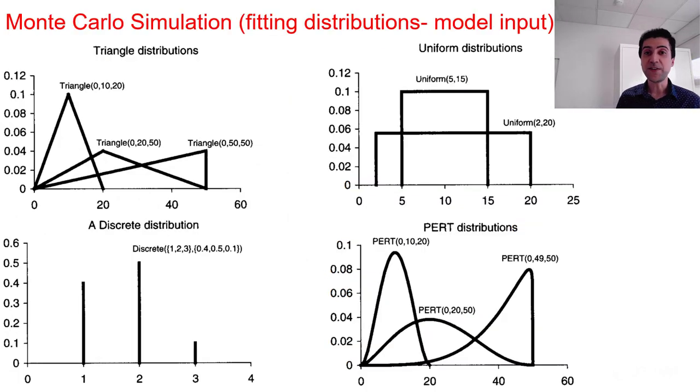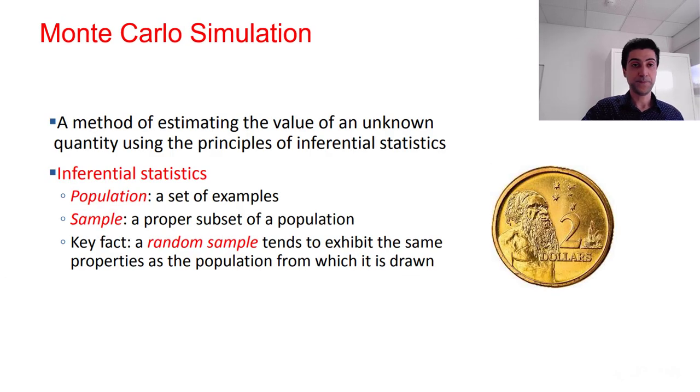In Monte Carlo simulation, we have more liberty to use other distributions than beta distribution. It is possible to use a range of continuous distributions including triangle, uniform, or PERT log normal distributions, and also discrete distributions. So Monte Carlo simulation is a useful method when we have a combination of different distributions in a complex problem at hand.